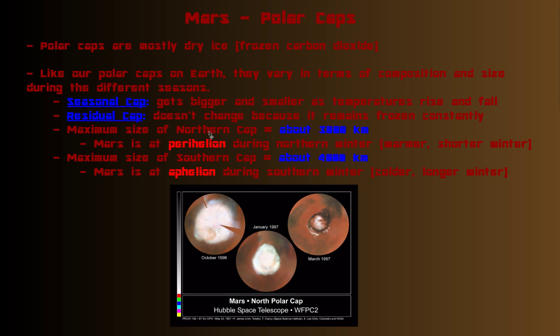The maximum size of the northern cap, by the way this is a picture of the northern cap, Mars' northern polar cap. The maximum size of this cap gets to be about 3,000 kilometers wide. That's because Mars is at perihelion during the northern winter. If you remember from the orbital video, perihelion is when the planet is closest to the sun in its orbit. Since Mars has such an eccentric orbit, it's much closer during perihelion than during aphelion. So the winter will be warmer and also shorter.